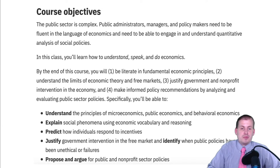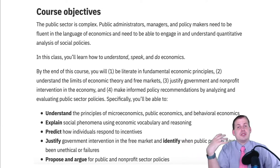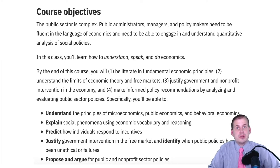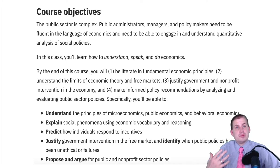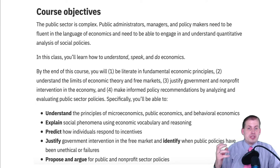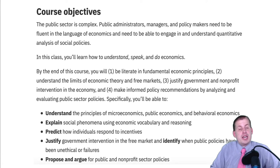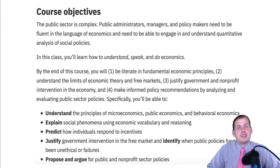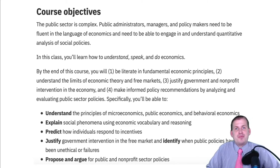You've also learned to predict how individuals respond to incentives. Hopefully you understand that incentives are very important — that intrinsic motivations can actually be crowded out by extrinsic ones, making people stop doing the right thing because it becomes a market transaction. These last two objectives — to justify government intervention in the free market and to identify when public policies have worked or not — we've covered in the past few sessions. Hopefully you now know the conditions for market failure and how government, private, informal, and nonprofit sectors can all help address those issues.